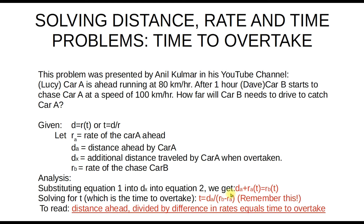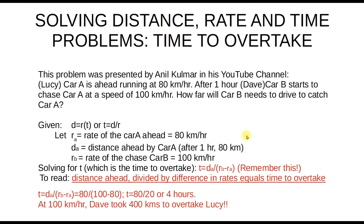This is very important. If you remember this formula, it's commonly used — in fact, if you know this, you can mentally solve the problem just by looking at the data. For this problem, the distance ahead is 80 kilometers, because Lucy's rate is 80 kilometers per hour and Dave starts 1 hour later. So we have 80 divided by the difference in rates, which is 100 minus 80, giving us 80 divided by 20, or 4 hours.